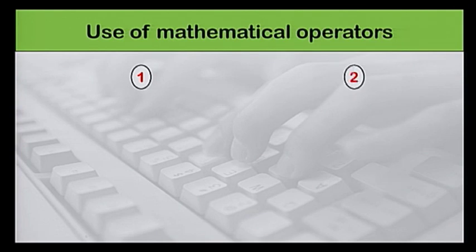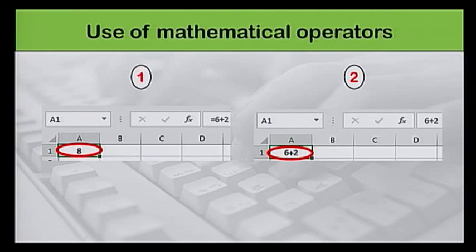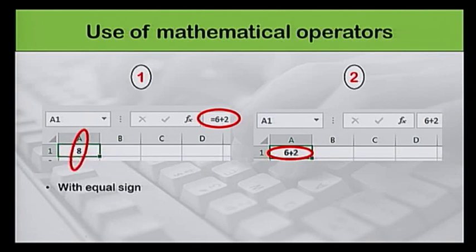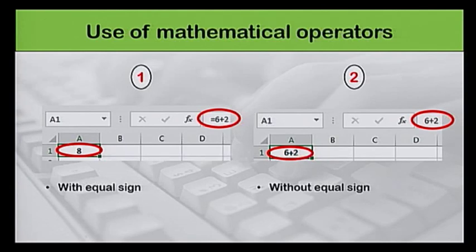Observe the values in cells A1 in both worksheets. As you can see, both are different. In the first worksheet, the formula starts with the equal sign, therefore cell A1 shows 8 as the result. The same formula is entered in the second worksheet, but this time without an equal sign. Now you can see that 6 plus 2 appears as the result. No calculation has been done as the equal sign is missing at the start.